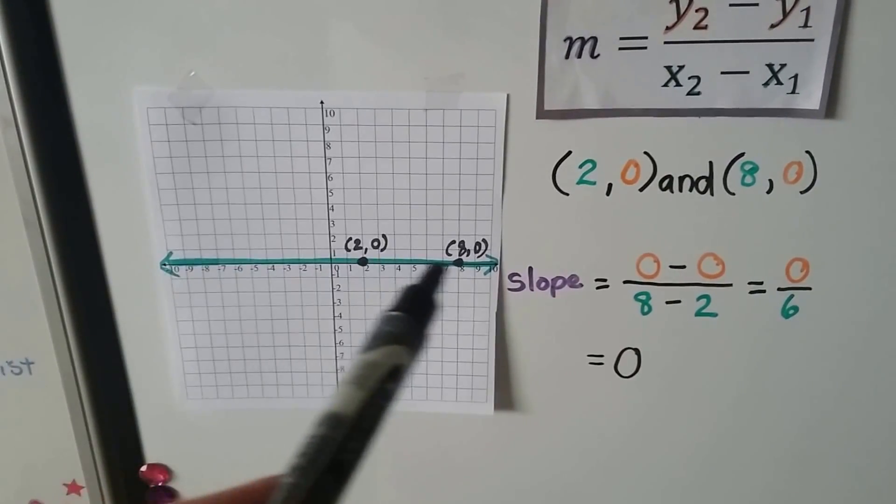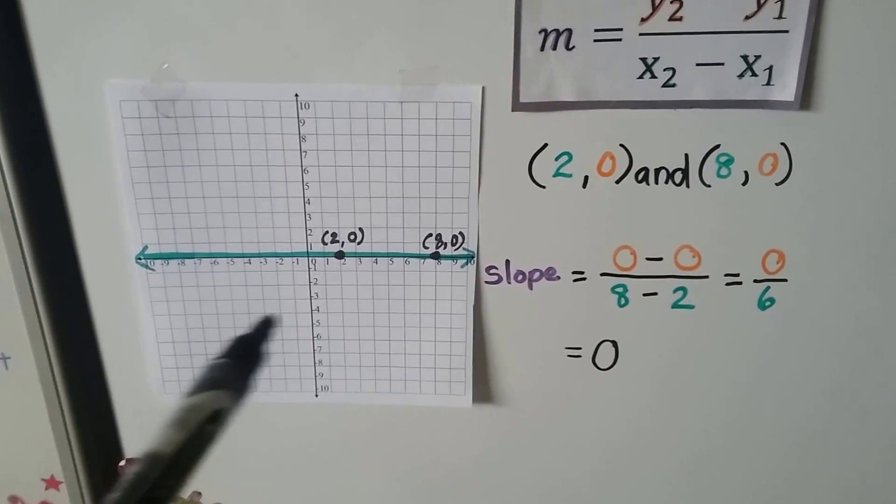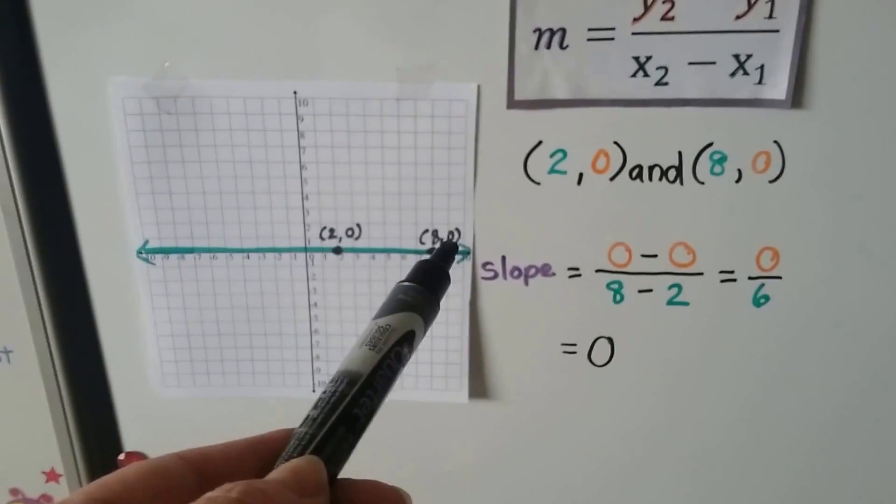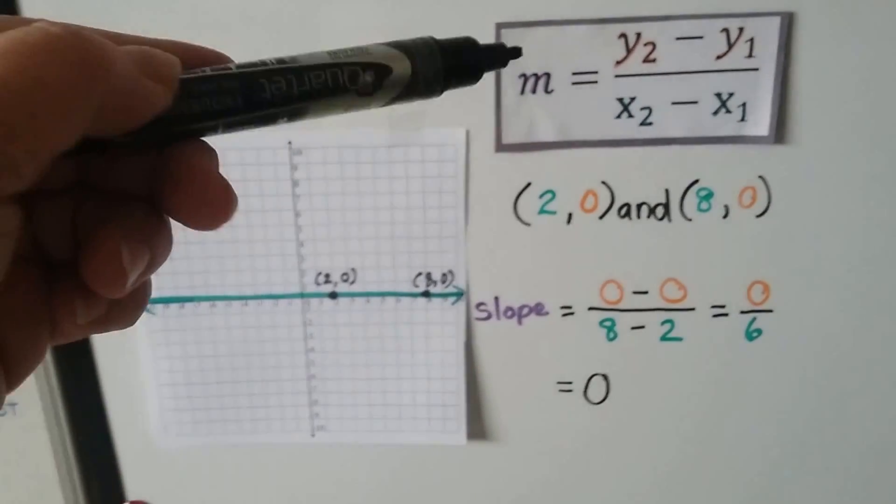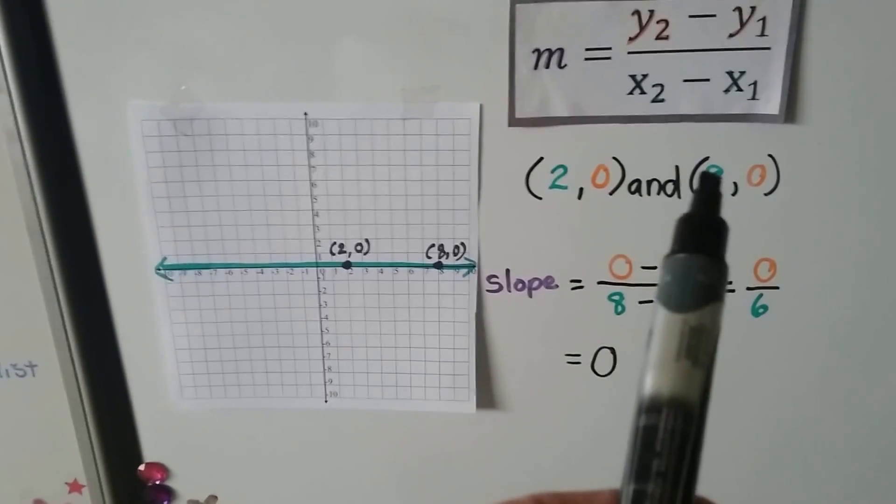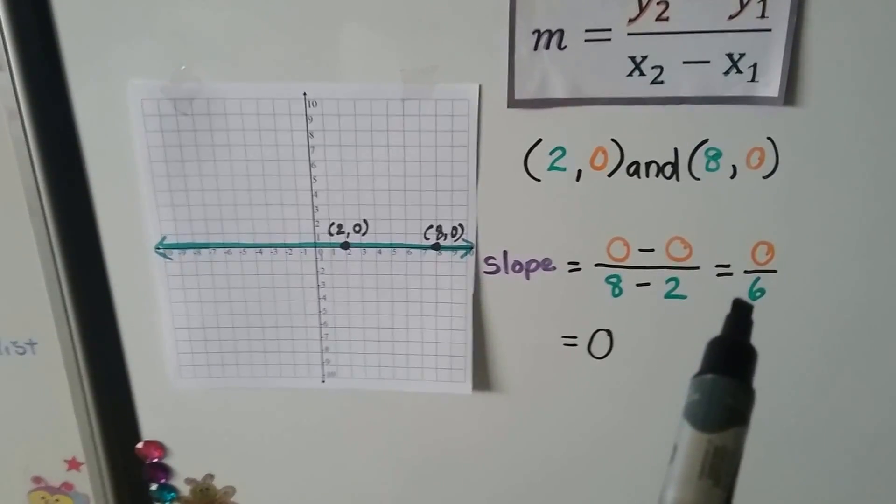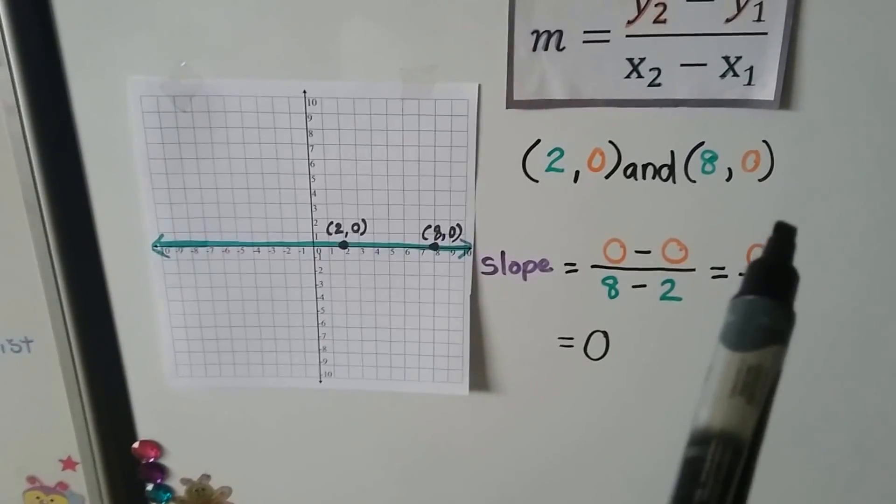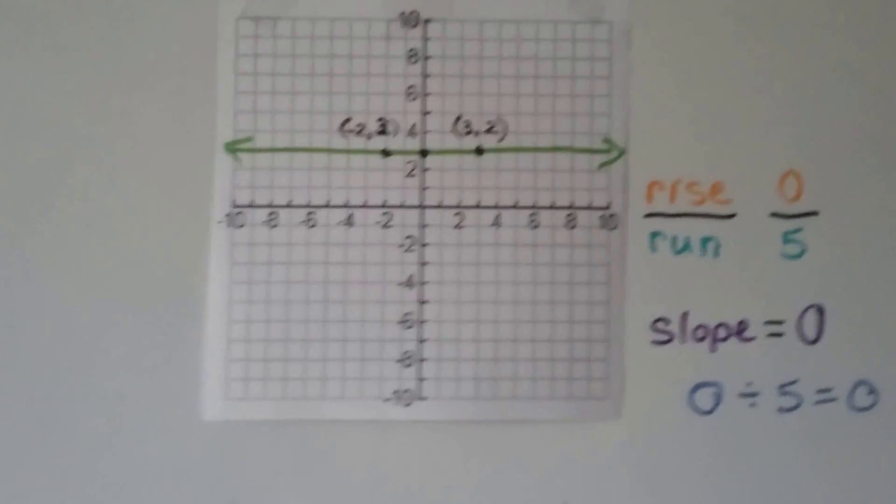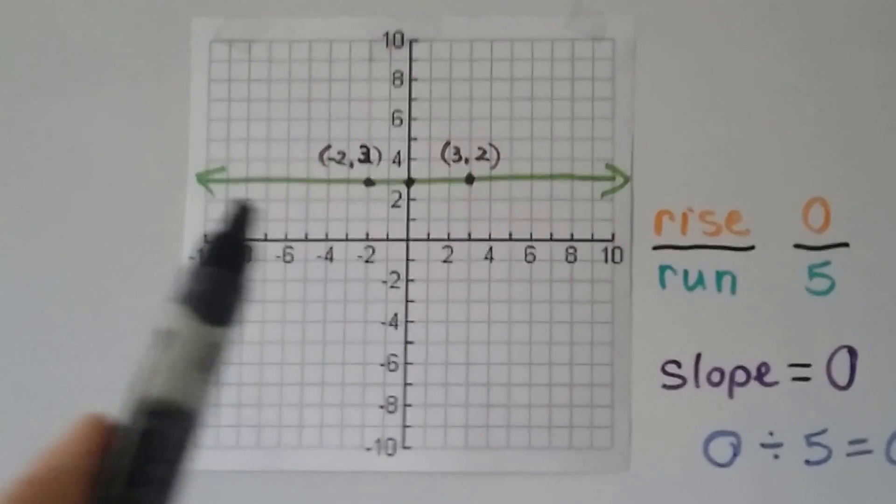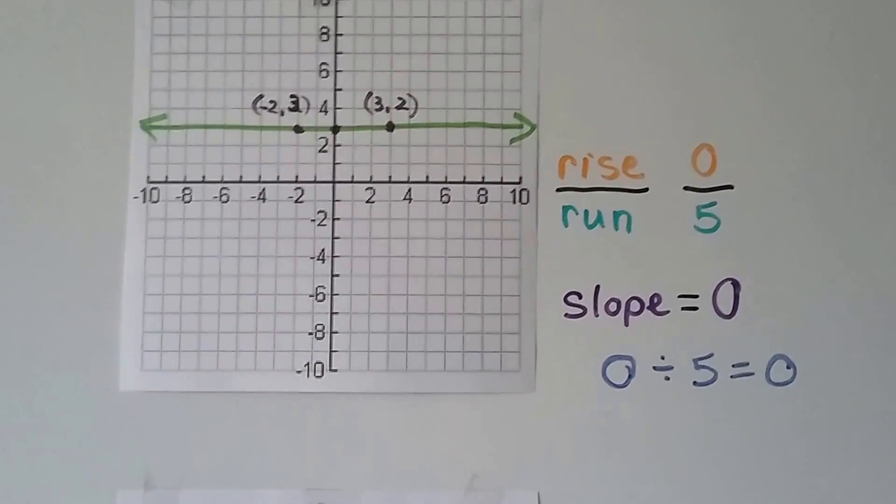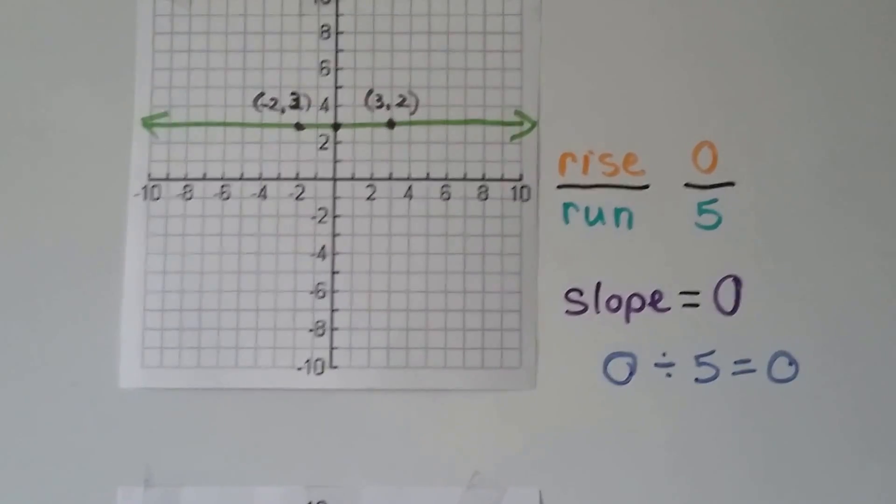Here our graphed line is actually on the x-axis. We have the first point, 2 for x, 0 for y, and 8 for x, and 0 for y. When we plug it into this formula, and we'll talk about how this m means slope in a couple videos. We're going to do this 0 minus that 0, and then that 8 minus the 2. We get a 0 divided by 6. That's a 0. So it's okay if the 0 is the numerator. Our answer is going to be a 0. Now this line is running straight across horizontally, and it's got no rise, and the run is a 5 between this point and this point, and 0 divided by 5 is 0, so our slope is 0.